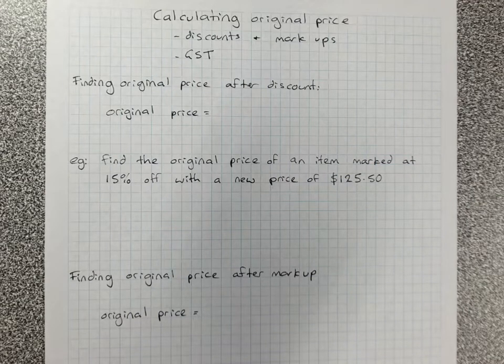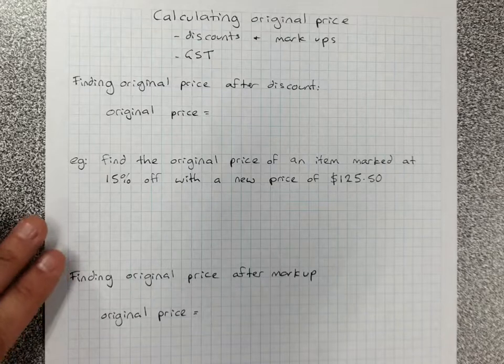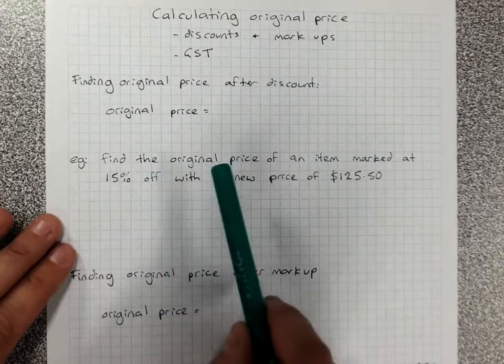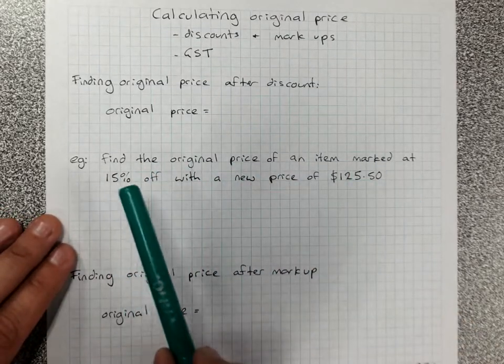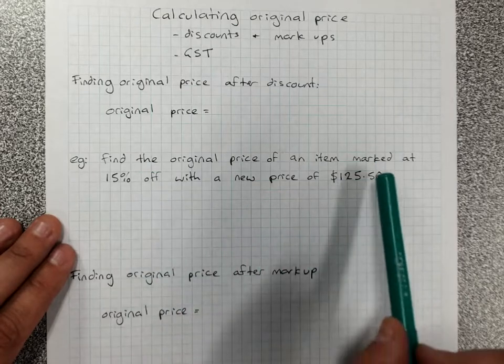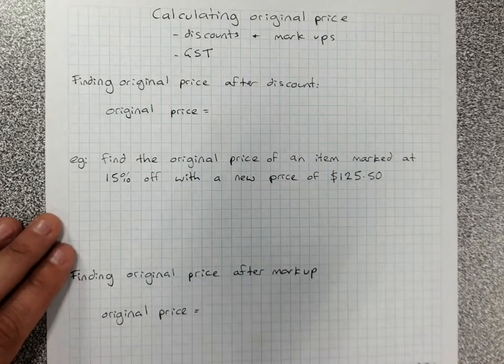Calculating original price. We're looking at discount and markups, but also at GST. So often we'll be given a question such as find the original price of an item marked at 15% off when its sale price is $125.50.